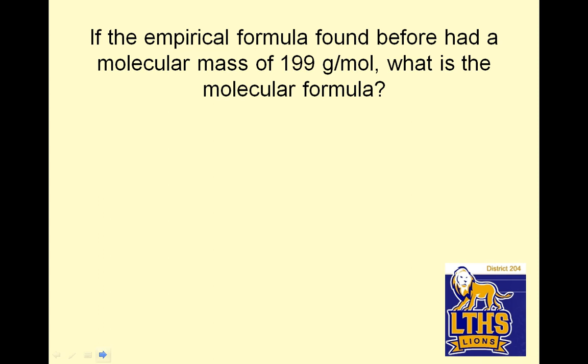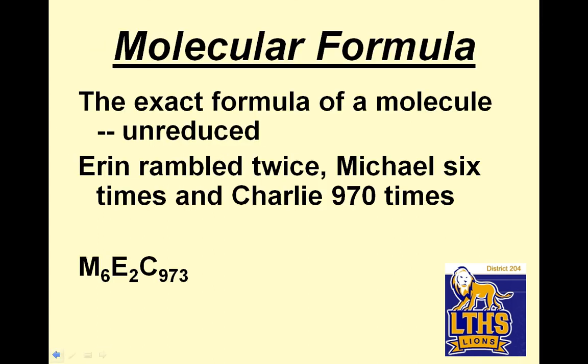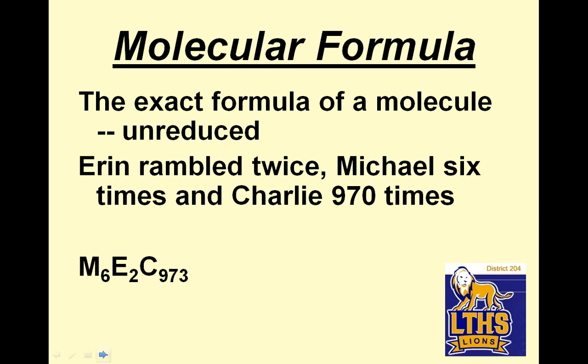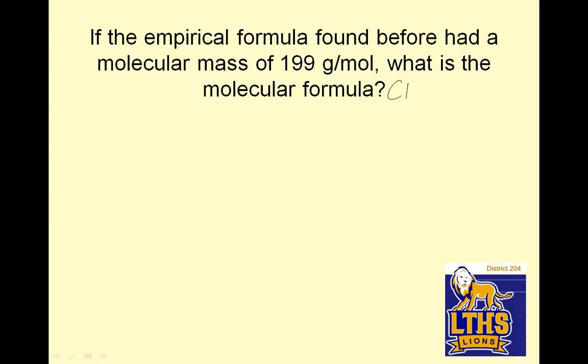The empirical formula found before had a molecular mass of 199. What is the molecular formula? So if I had CH2Cl, I need to find the mass of that. Carbon is 12.01, two hydrogens are 2.02, and one chlorine is 35.45. Add those up, 49.48. So I'm going to take my big number, 199, and I want to know how many 49.48's fit in my big guy.